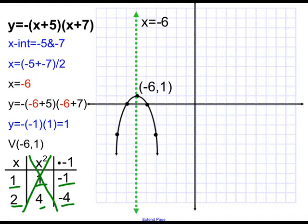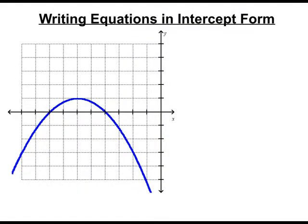So that is a review of how to graph an intercept form. So today, what we're going to do is we're going to write the equation given a graph, and then write an equation given only points. First thing we need to do is we need to identify those x-intercepts from our graph.